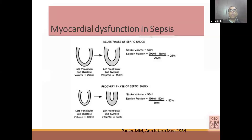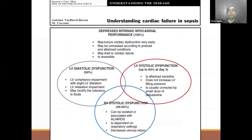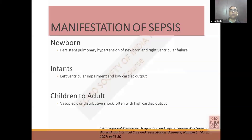In the acute phase, there will be a drop in ejection fraction, but in the recovery phase the myocardial contractility improves and ejection fraction improves. In the early phases of cardiac dysfunction it usually remains unnoticed, though there is always a difference in intrinsic myocardial performance. It is unmasked when there is a problem with preload and afterload, and it can lead to cardiac failure if the preload-afterload imbalance is not corrected — though it is reversible if treated well. In almost 50% of patients, LV diastolic dysfunction will occur, while RV systolic dysfunction also happens especially in those who develop acute lung injury or ARDS, in almost 30–50% of patients.